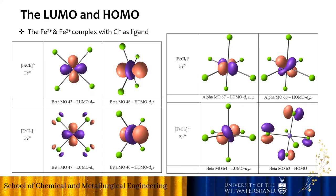Here are the HOMO and LUMO for iron 2 and iron 3 complexes with chloride. When there are four chloride ligands, it is a tetrahedral form. And when there are six chloride ligands, it is an octahedral form of complex.